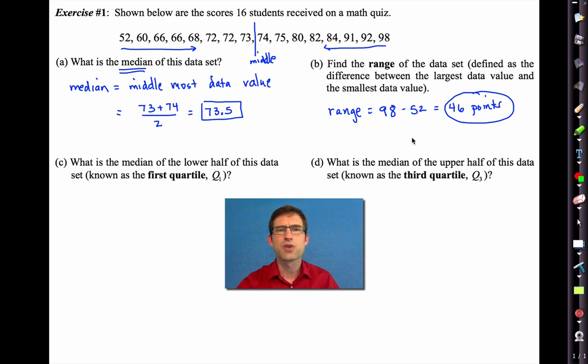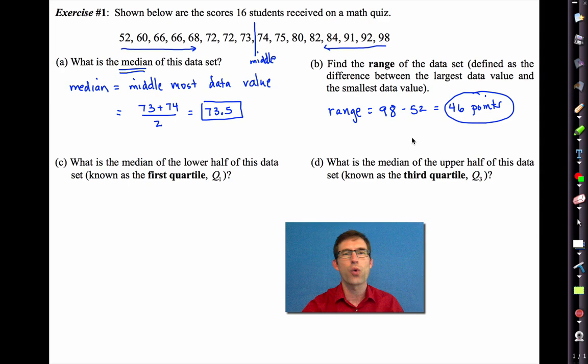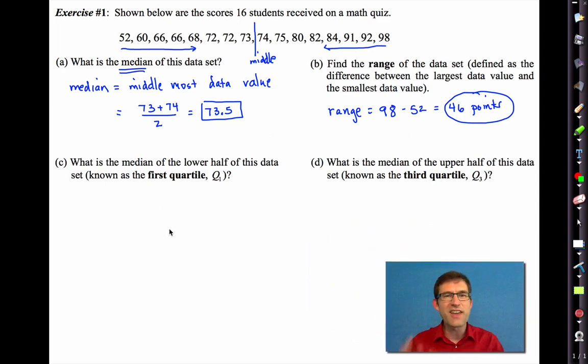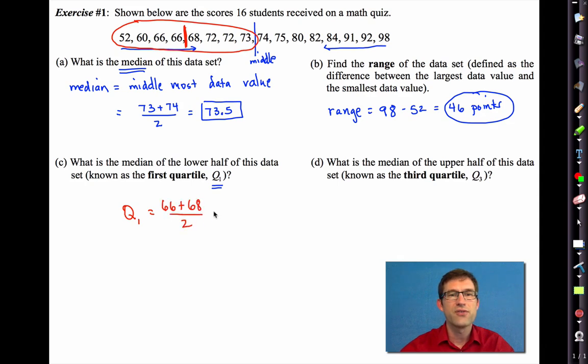Now, here we're going to start to talk about some terminology that you probably haven't heard of before, what are known as the quartiles. So, letter C asks, what is the median of the lower half of this data set known as the first quartile? All right. So, what quartiles do is they literally chop the data set up into quarters. The first quartile, which is often symbolized with a q and a little one down at the bottom, is given by taking a look at the lower half of the data set. Let me circle that in red. And then what we're going to do is we're going to find the median of that. Well, that's also got an even number. So, our q1 is going to be 66 plus 68 divided by 2. So, our first quartile is 67. That's the value that cuts off the first 25% of the data from the second 25% of the data.